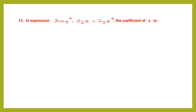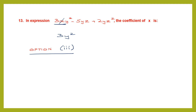Question 13: in this expression, we are asked for the coefficient of x. x appears in the first term. When finding the coefficient of something, leave out that variable and write the rest. So the coefficient is 3y squared, and our answer is option 3. That was a simple one.